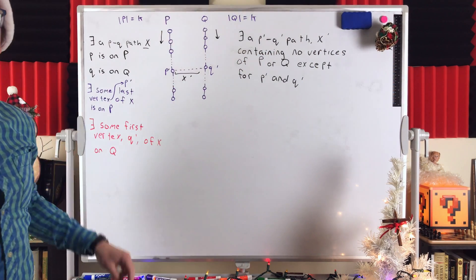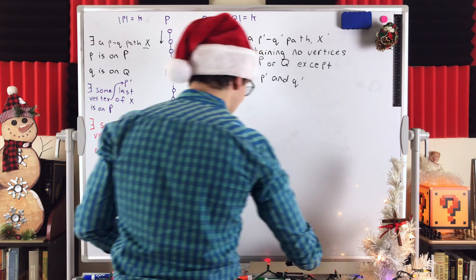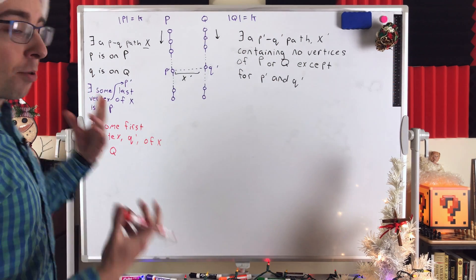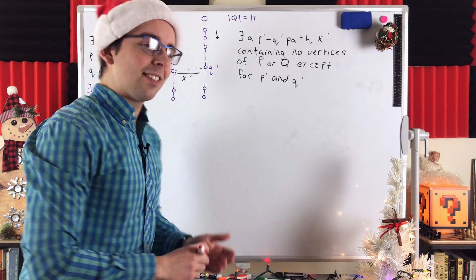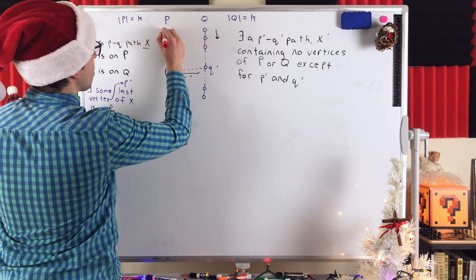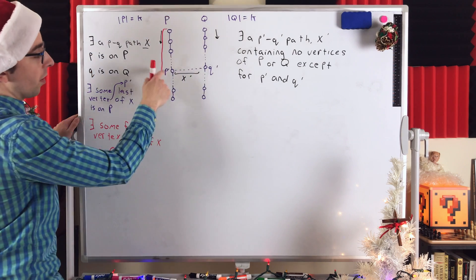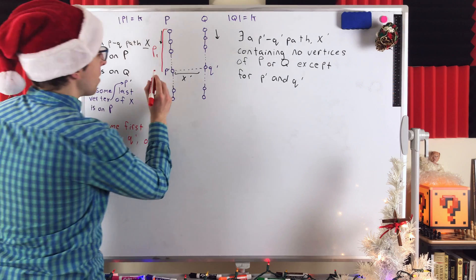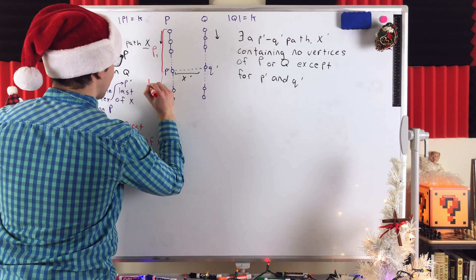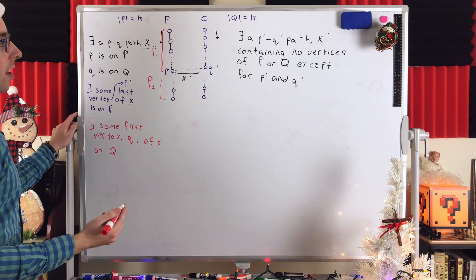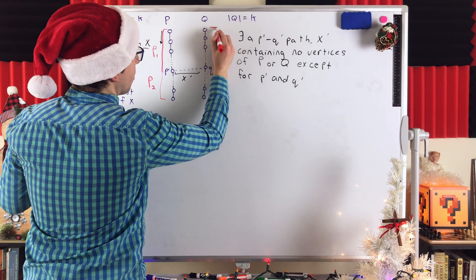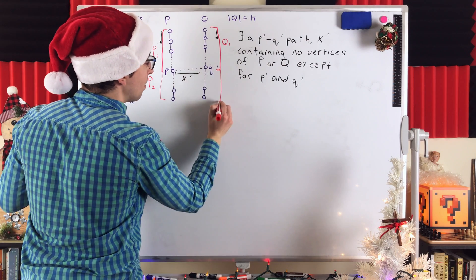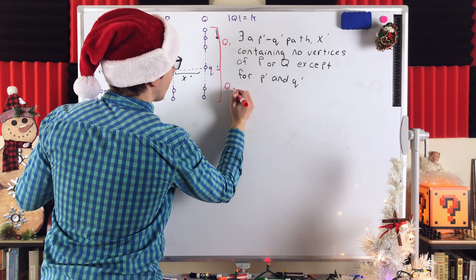Now we just need to split P and Q into two pieces to finalize the contradiction. The first part of P going from the first vertex to P prime, we'll call P one. The rest of P going from P prime to the last vertex, we'll call P two. Same thing with Q: going from the first vertex to Q prime, we'll call that Q one; going from Q prime to the last vertex, we'll call that Q two.